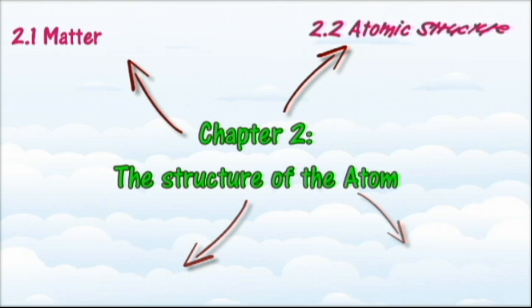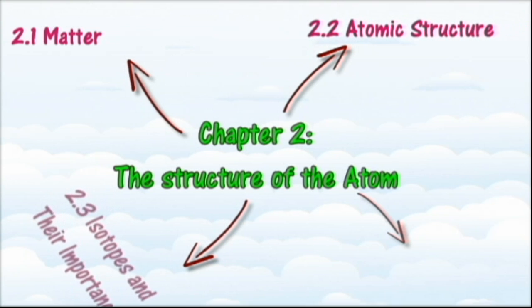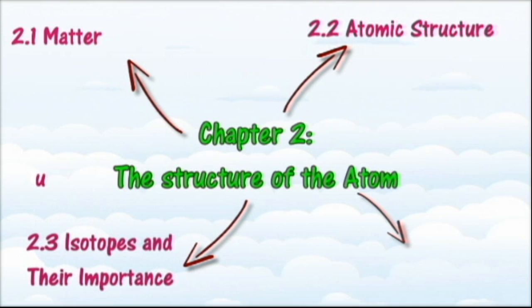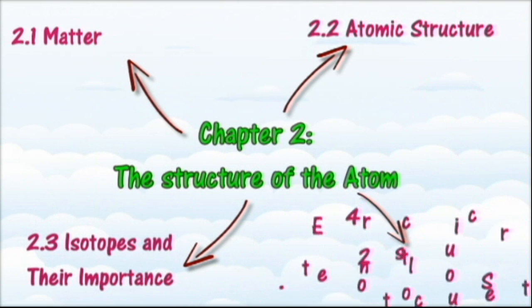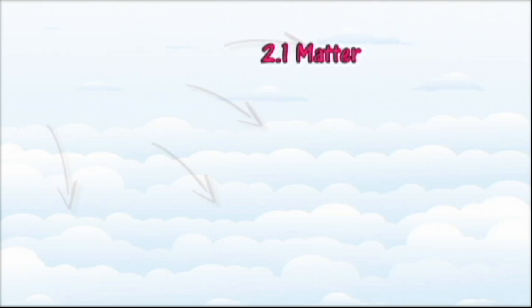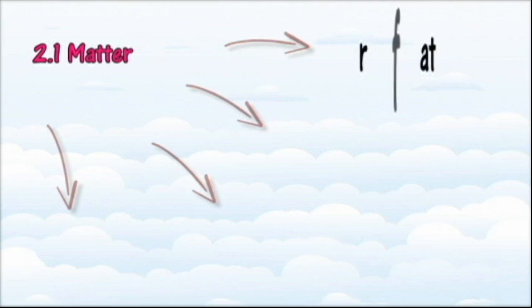There are four main sections in this chapter: 2.1 Matter, 2.2 Atomic Structure, 2.3 Isotopes and Their Importance, and 2.4 Electronic Structure of Atoms. In section 2.1 we will learn about matter and the kinetic theory of matter.